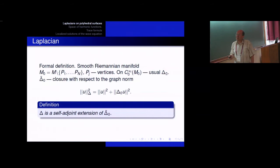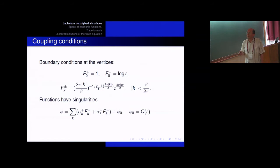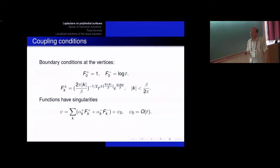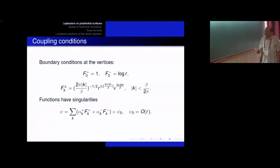The point is that this Laplacian is not unique. Practically speaking, we have to impose some boundary conditions at the vertices of our polyhedron. Near each vertex, each function from the domain of the Laplacian can have singularities. If the total angle is less than 2π, the only possible singularity is logarithmic; if we have a large total angle, we have singularities of power type. Here r and theta are polar coordinates near the vertex, and the asymptotics of the function has a corresponding form. The boundary conditions connect the coefficients α+ and α− which appear in front of these singular functions.